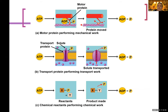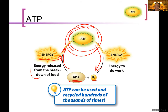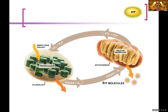One of the cool things about ATP is that it is reusable — it can be recycled hundreds of thousands of times. Your cells are constantly recycling: ATP is converted into ADP when energy is used, and then energy is used to reload the ADP to make ATP again.